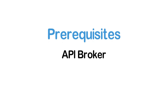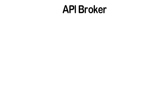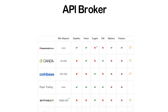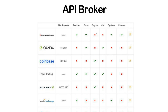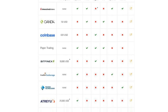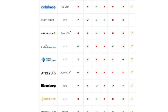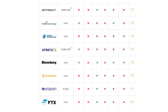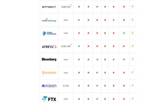First and foremost, to be able to trade algorithmically, you need to have an account at a broker that supports algorithmic trading. This is usually the case if the broker offers an API for you to use and connect your algorithm with. As of the recording of this video, QuantConnect supports over 10 brokers including Interactive Brokers, Oanda, Tradier, Binance and more. However, they are continuously working on adding support for more brokers. You can check out the link in the description box to see which brokers are currently supported at the time you watch this.